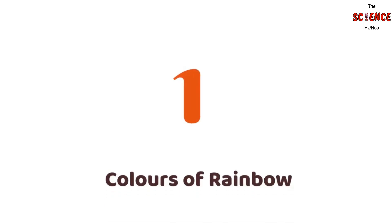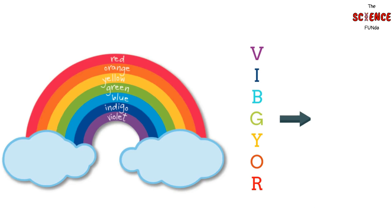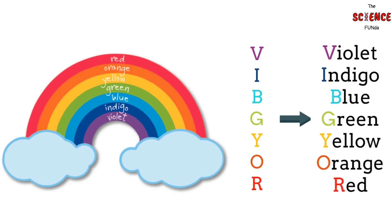Number 1: Colors of the Rainbow. To remember and recall the colors of the rainbow, we have the mnemonic VIBGYOR. Each letter of this word represents a color of the visible light spectrum: Violet, Indigo, Blue, Green, Yellow, Orange, and Red.